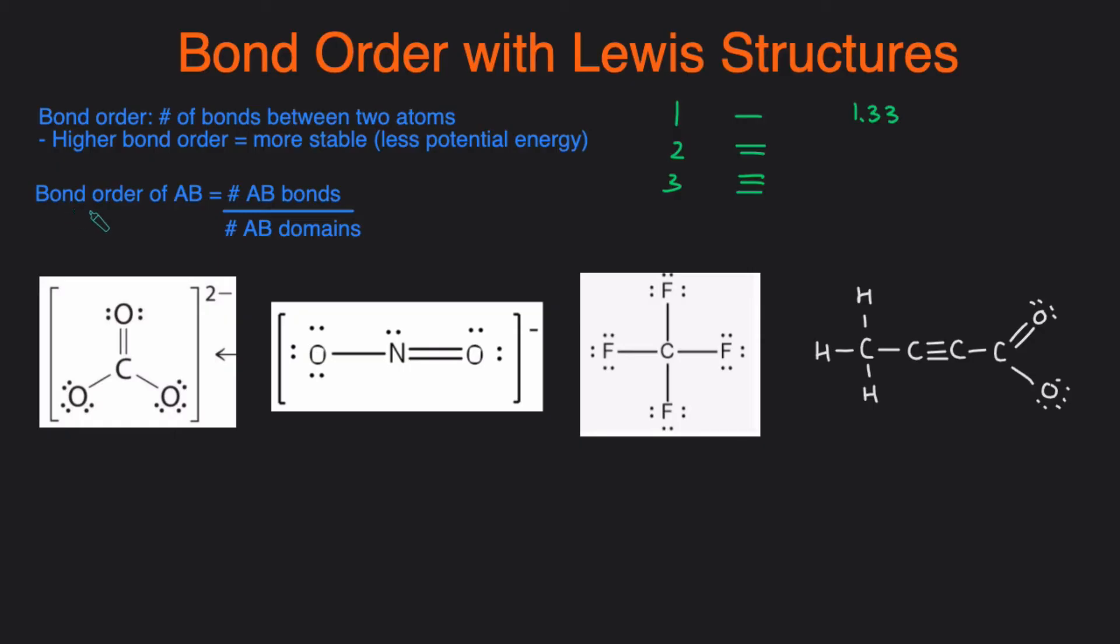And lastly, to calculate the bond order between two atoms, it's equal to the number of bonds divided by the number of bonding domains. And this will make a lot more sense when we go through the examples.